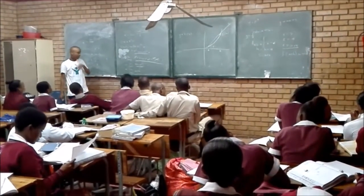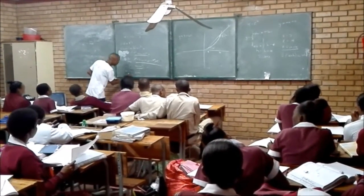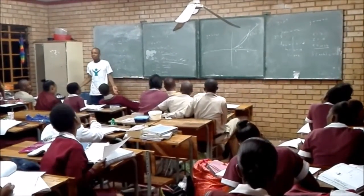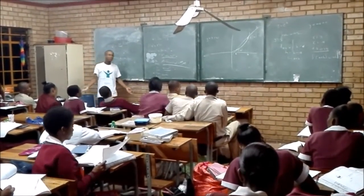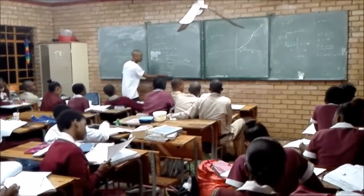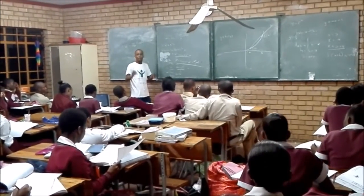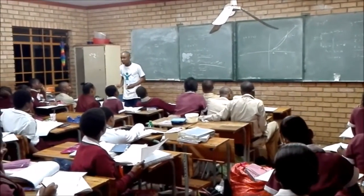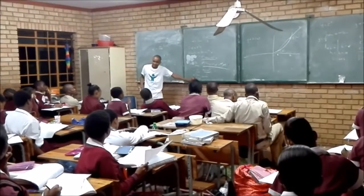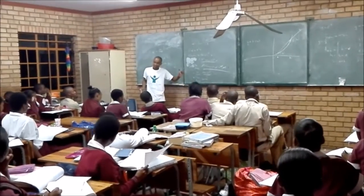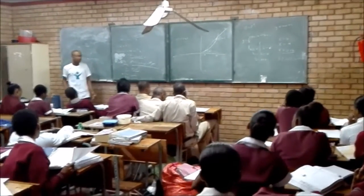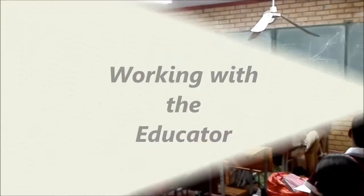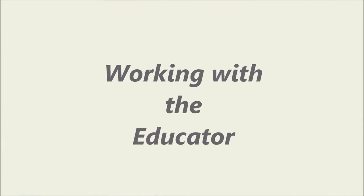Right. But what is our h tending to? It's tending to zero. So you substitute it here — it becomes zero. Mind you, it will never actually be zero, but you substitute it as zero. So your answer is 2x.